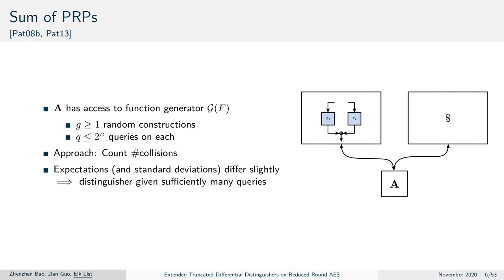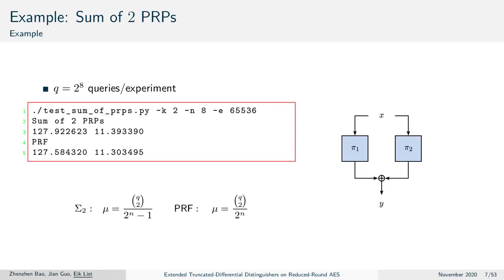He found that between the sum of k permutations and a truly random function, the mean and the standard deviations of the number of collisions differed slightly. He obtained new distinguishers given sufficiently many queries. This is illustrated for q = 2^8 queries per experiment over 8-bit permutations. For the sum of two permutations the expectation is close to 2^(n/2), which is 128 in this example, while for a random function the sum is close to 2^n minus 1 half, which is 127.5 in this tiny example.